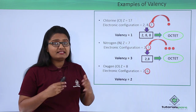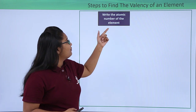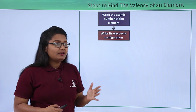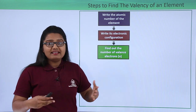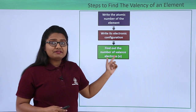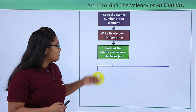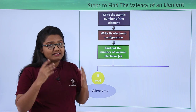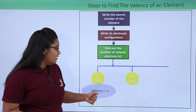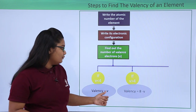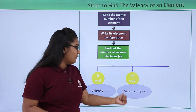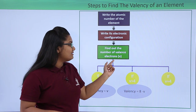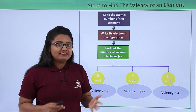Let us learn how to find valency in a stepwise manner. The first step is to write the atomic number of the element. Next, write the electronic configuration. Then find the number of valence electrons — call it V. Check whether V is less than 4: if yes, the valency equals V. If V is greater than 4, subtract V from 8 to get the valency (valency = 8 − V). If V equals 4, the valency is simply 4.